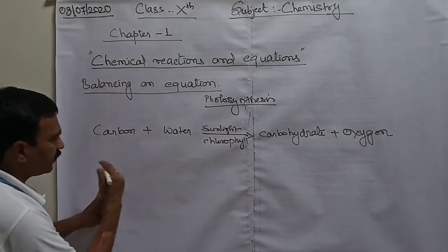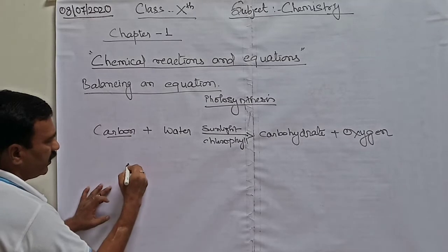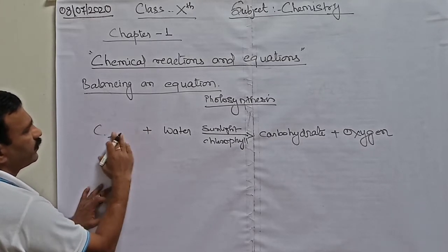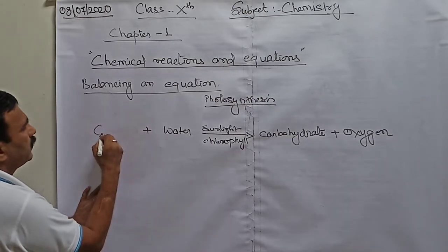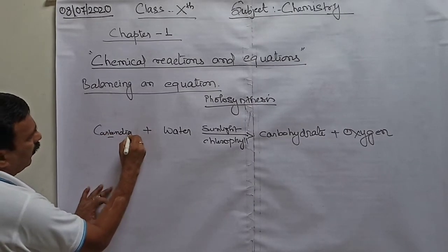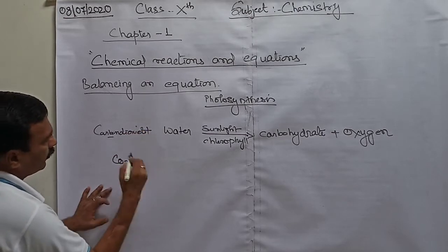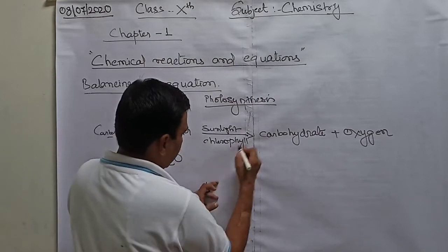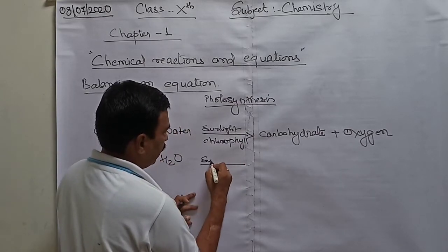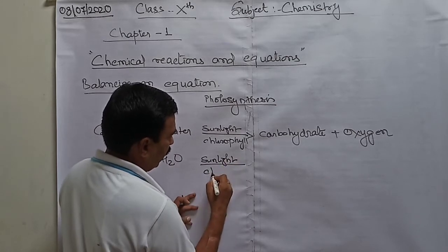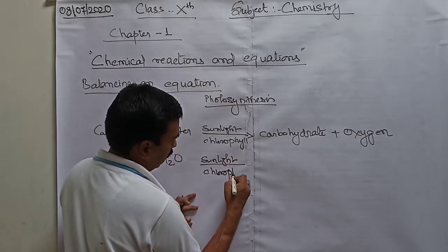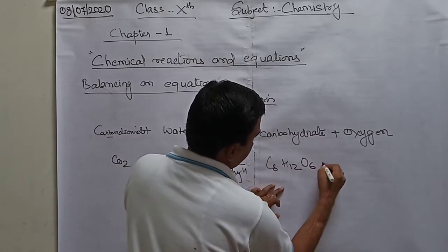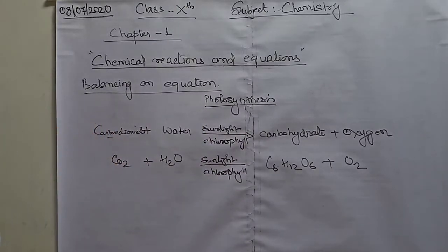This is the equation. Now, we will write it in symbols. The symbol of carbon dioxide is CO2. The formula of water is H2O. Here, the same sunlight, chlorophyll, and carbohydrate C6H12O6 plus O2. This is the equation.